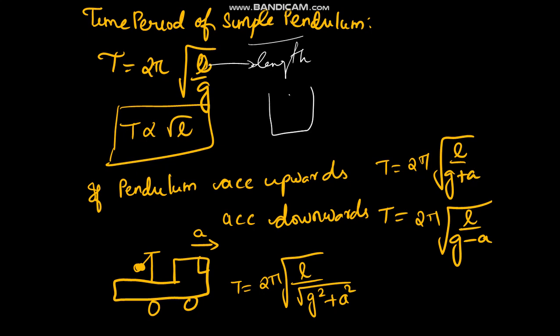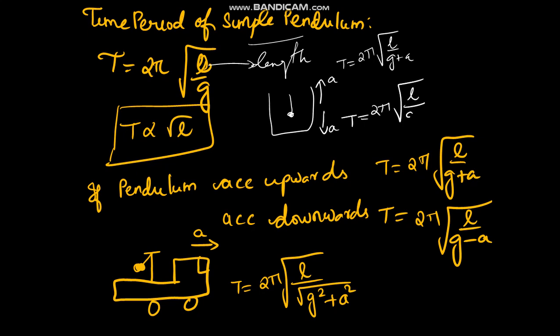Suppose there is a lift in which the simple pendulum is hanging and it is moving upward with acceleration a. The time period is given by 2π√(L/(g+a)). If the lift is moving downward with acceleration a, the time period is given by 2π√(L/(g−a)). The same concept we learned in apparent weight on a lift applies here: upward gives g+a, downward gives g−a.